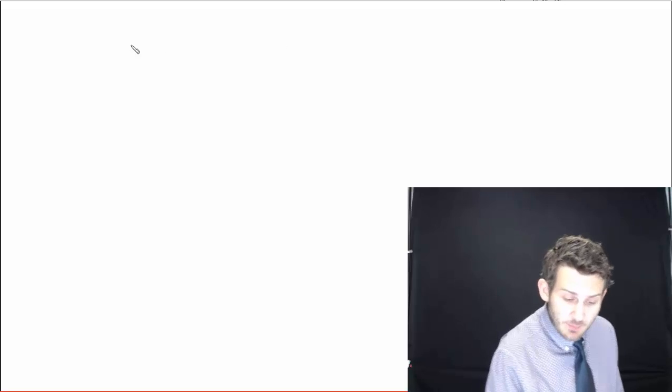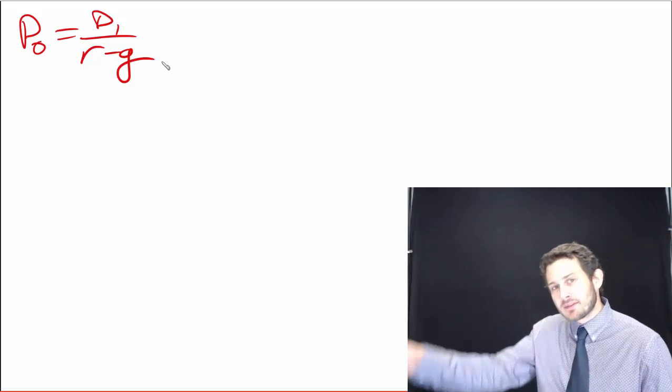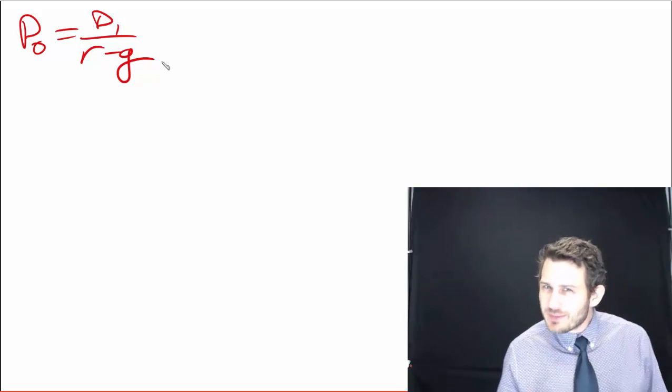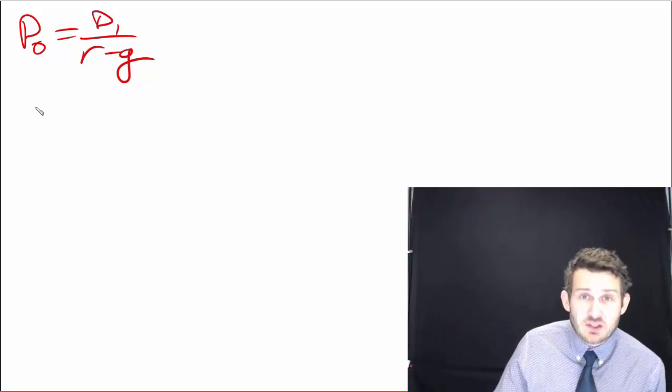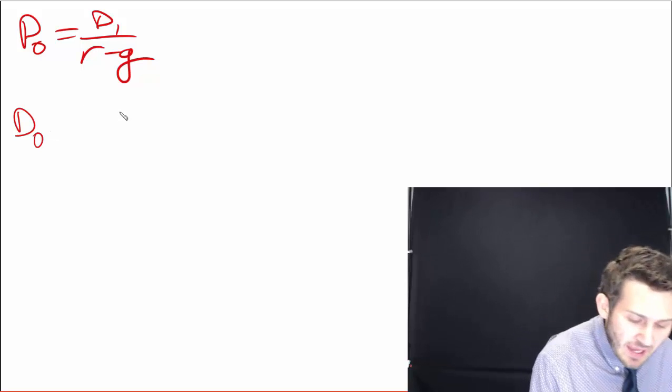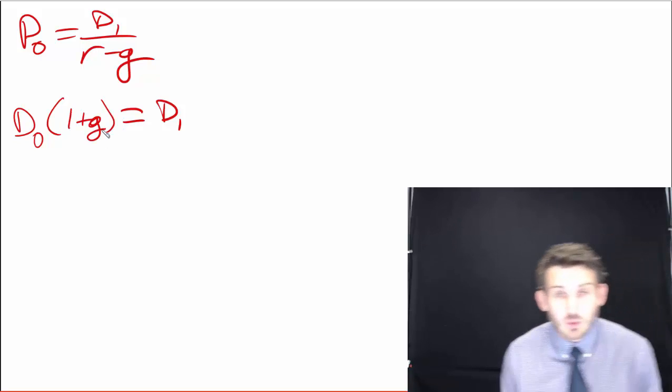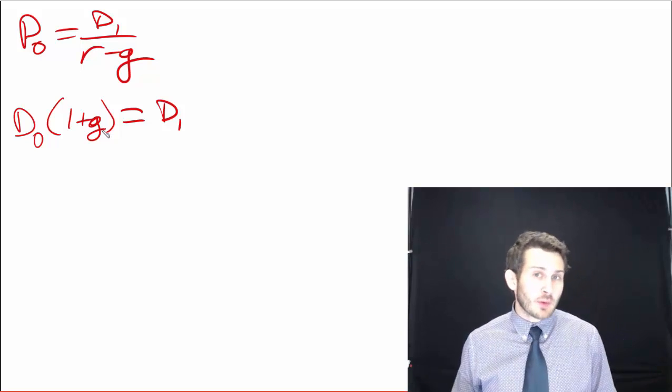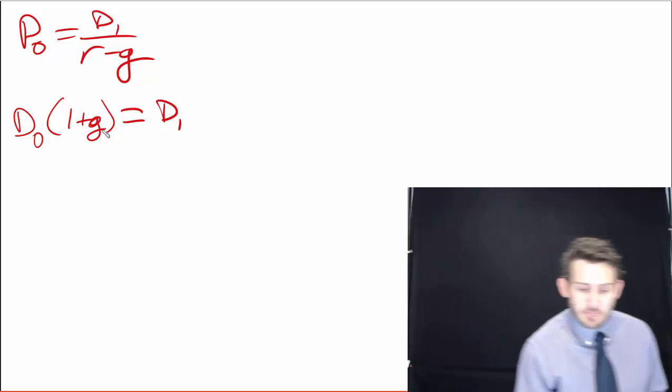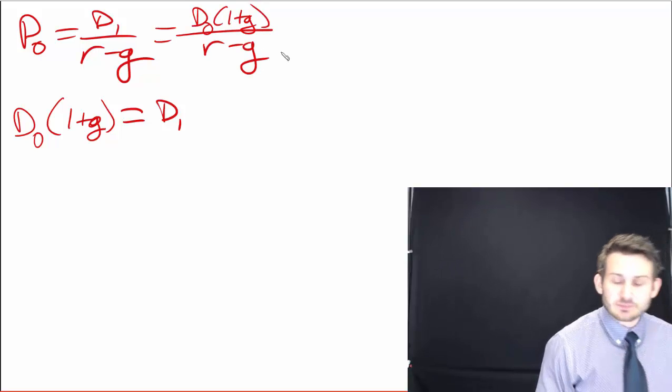So the next step here is we're still looking at P0 equals D1 divided by R minus G. The important part to remember here is that we're looking at our dividend in the next time period, the dividend next year, not this year. So what we don't typically have is we don't typically have the dividend next year because that's looking into the future, but we will always have what the dividend is today, D0. And in order to get to D1, how am I going to figure that out? Well, simply put, I'm just going to take 1 plus G. We're going to take our dividend today and multiply it by 1 plus our growth rate. Very similar to the way that we put money into a bank account and earn interest on it to see what it was worth next year. So this part right here is equal to the same thing, which is D0 times 1 plus G divided by R minus G.